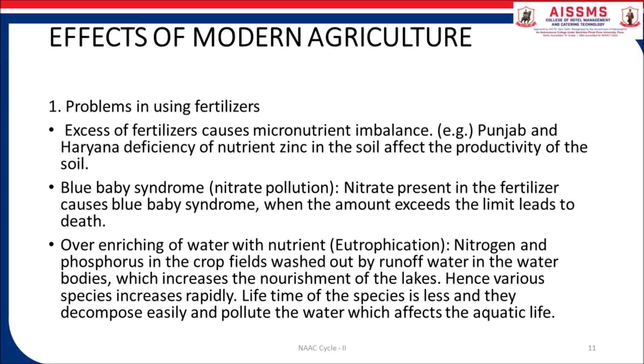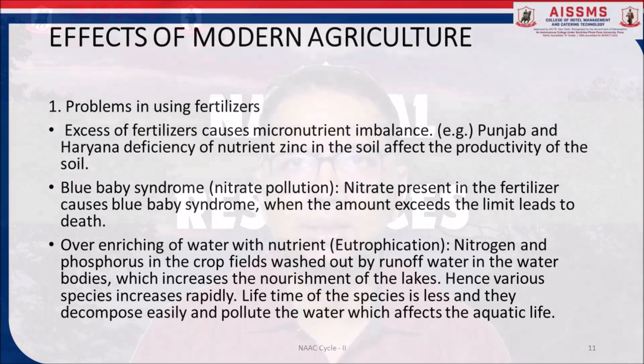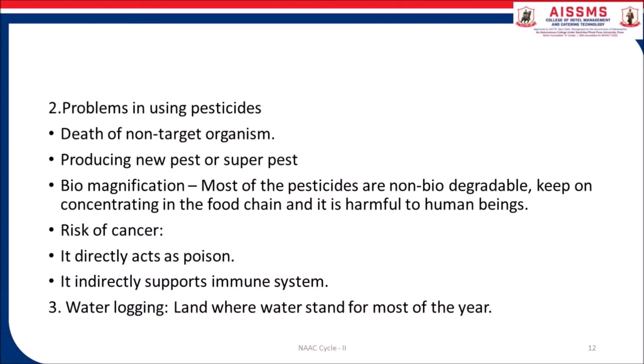Hence, various species increase rapidly. The lifetime of species is less and they decompose easily and pollute the water, which affects aquatic life. Second, problems in using pesticides: death of non-target organisms, producing new pest or super pest, biomagnification — most pesticides are non-biodegradable and keep concentrating in the food chain, which is harmful to human beings. Risk of cancer — it directly acts as a poison and indirectly suppresses the immune system.